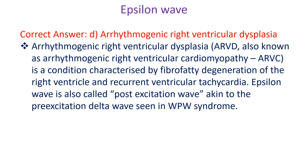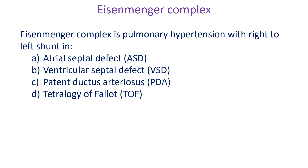Arrhythmogenic right ventricular dysplasia, also known as arrhythmogenic right ventricular cardiomyopathy, is a condition characterized by fibro-fatty degeneration of the right ventricle and recurrent ventricular tachycardia. Epsilon wave is also called post-excitation wave, akin to the pre-excitation wave seen in WPW syndrome.